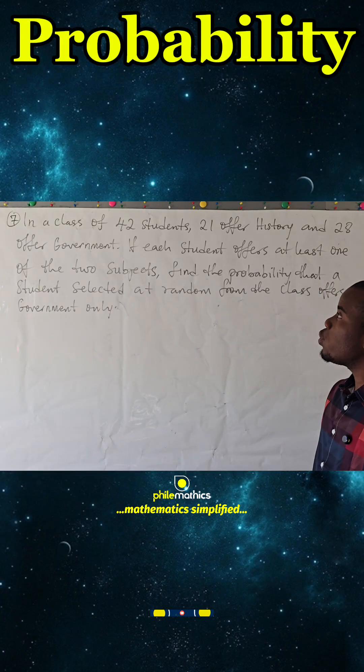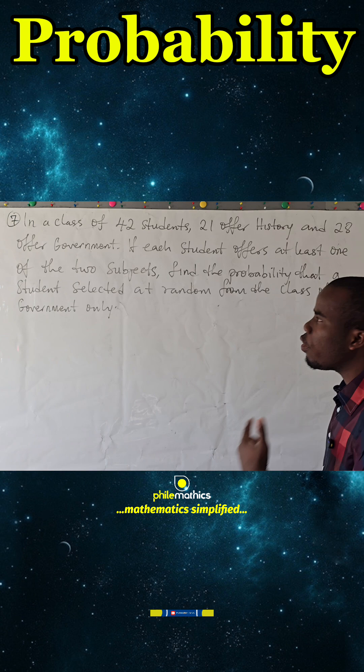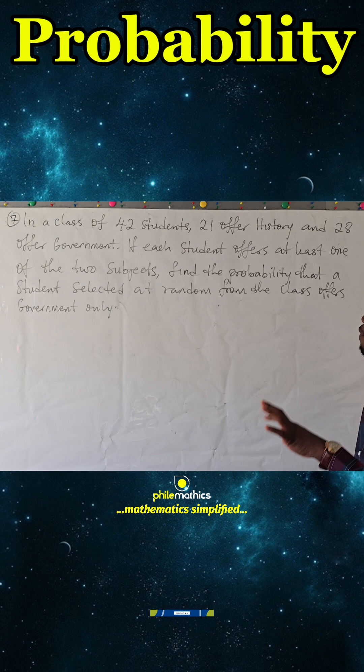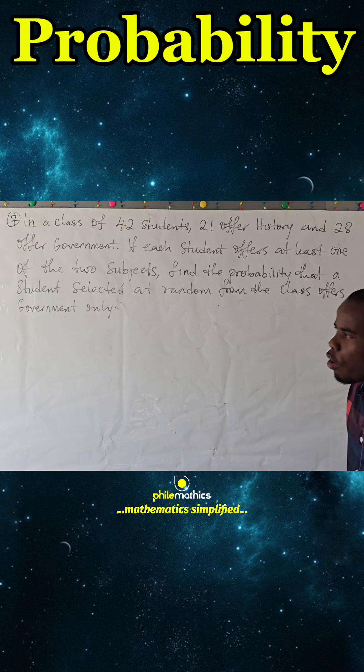In a class of 42 students, 21 offer History and 28 offer Government. If each student offers at least one of the two subjects, find the probability that a student selected at random from the class offers Government only.